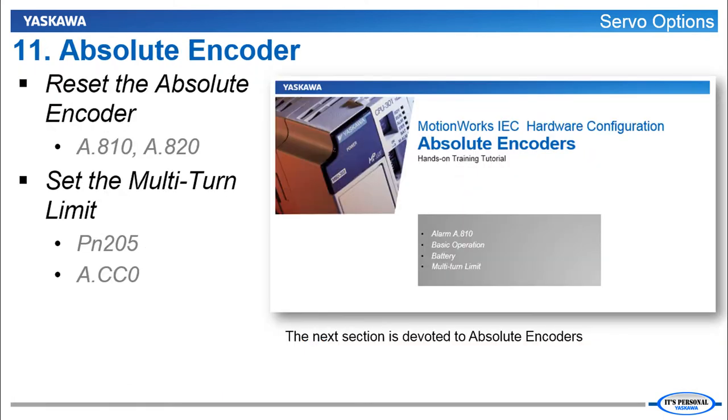Next up is the absolute encoder. And we have worked with the absolute encoder quite a bit in the previous videos. We've cleared alarms A810 possibly A820 and ACC0. There's another parameter that takes a bit to discuss called the multi-turn limit. But you may have noticed that the next entire video in this series is completely dedicated to absolute encoders. So let's just hold off on this topic until the next video.